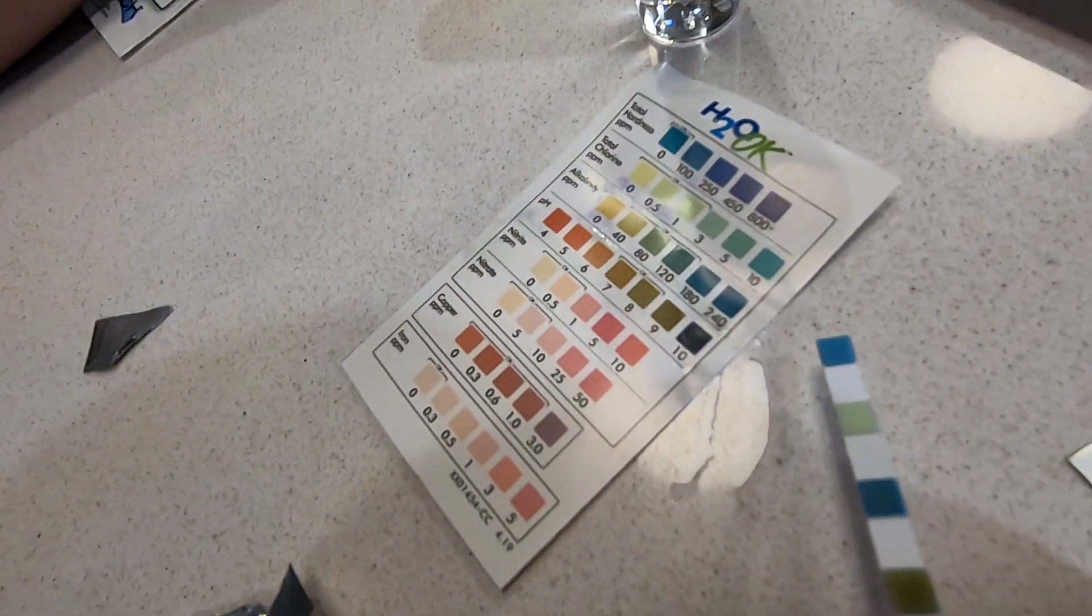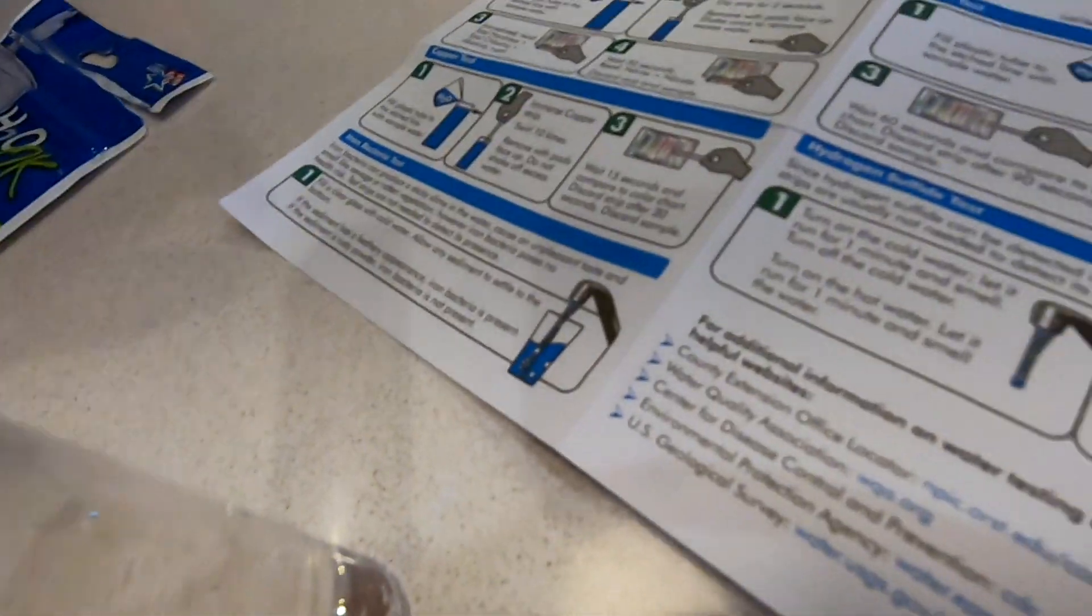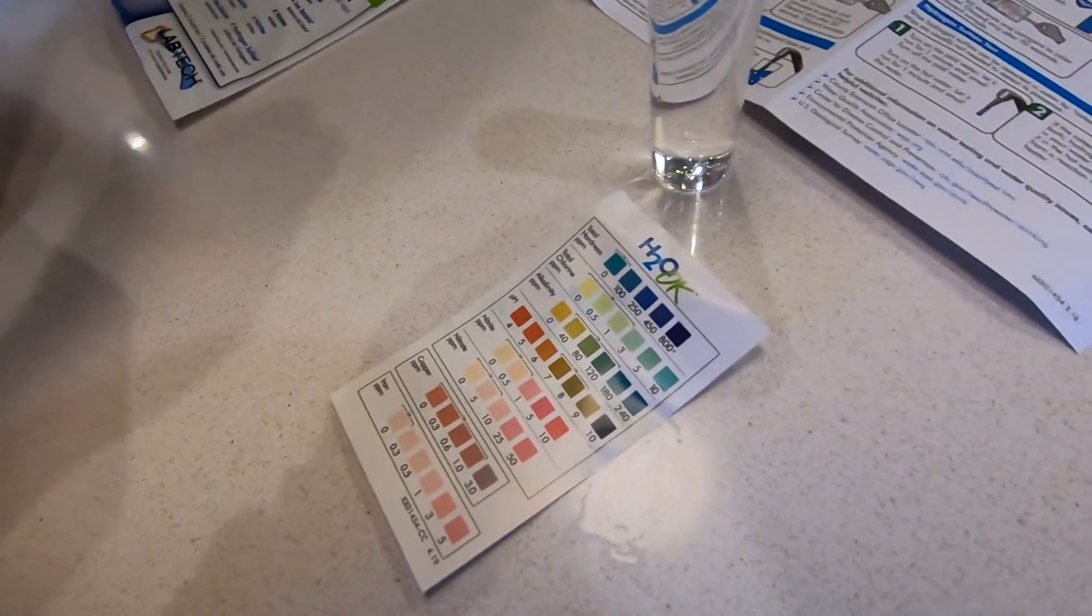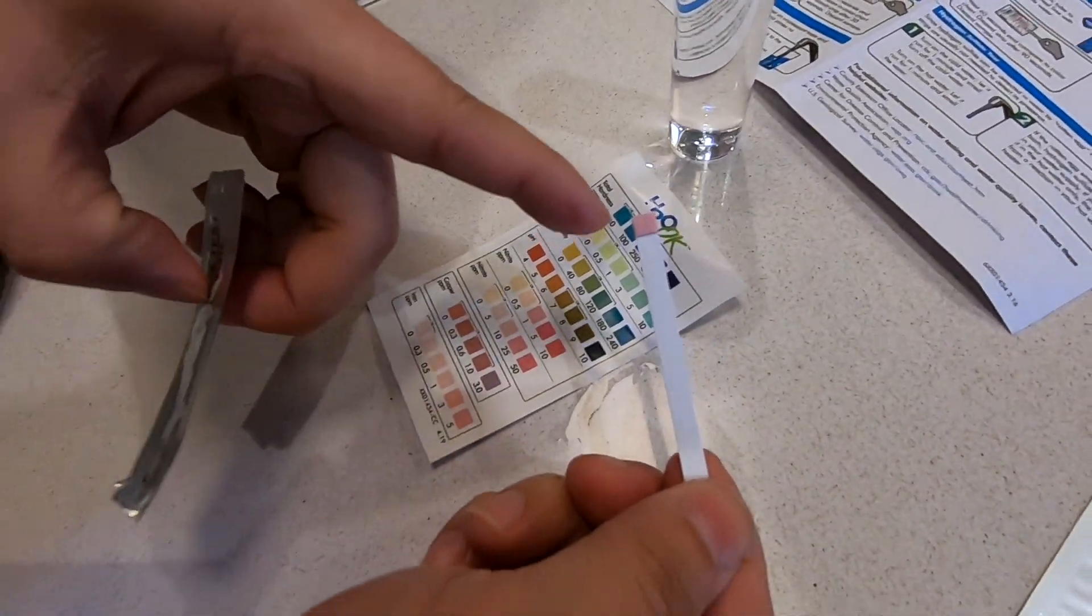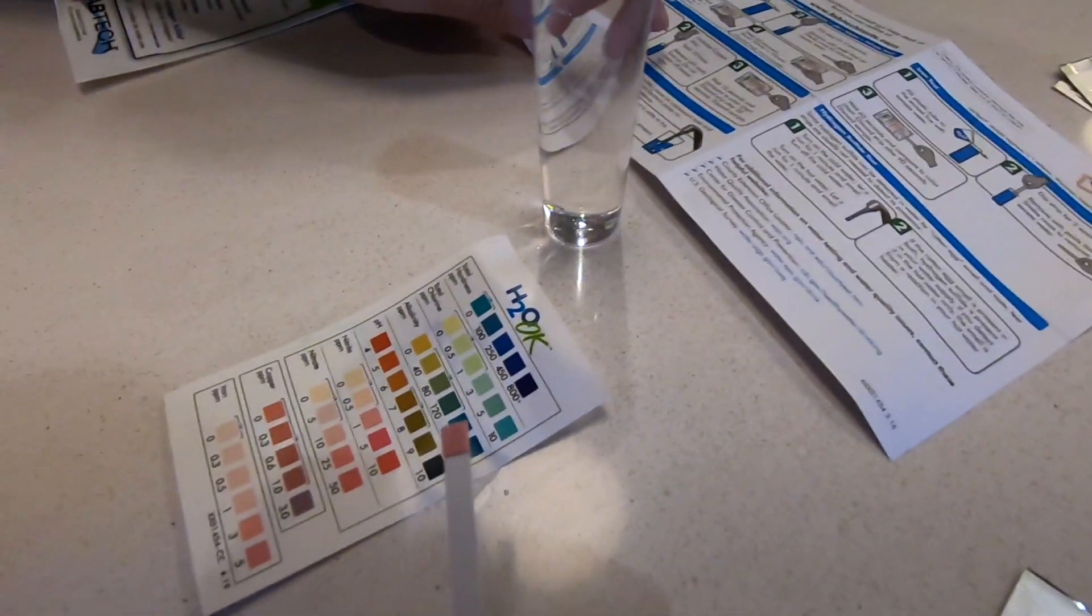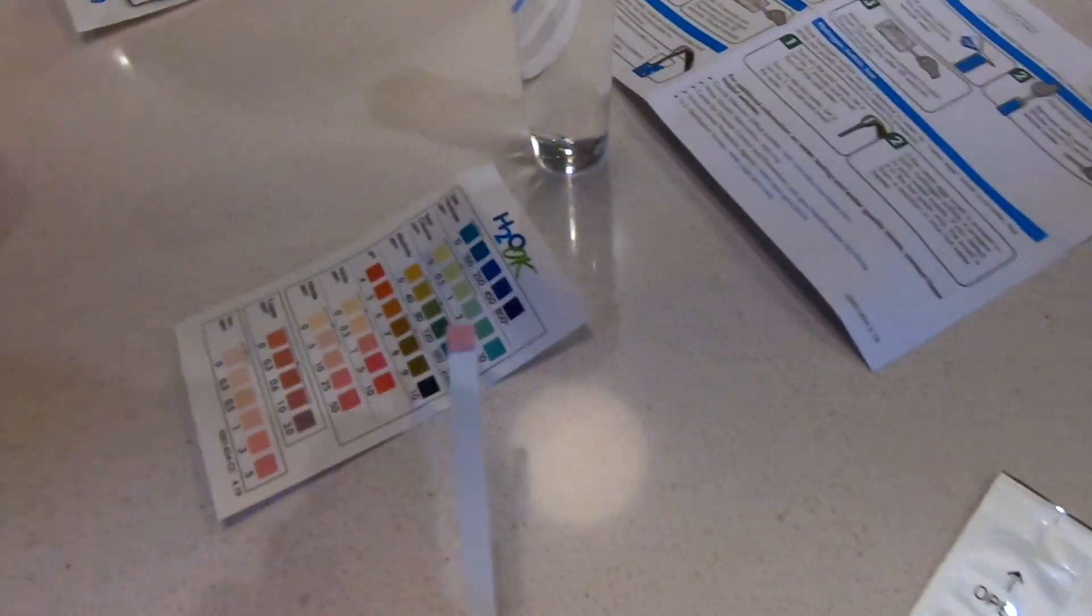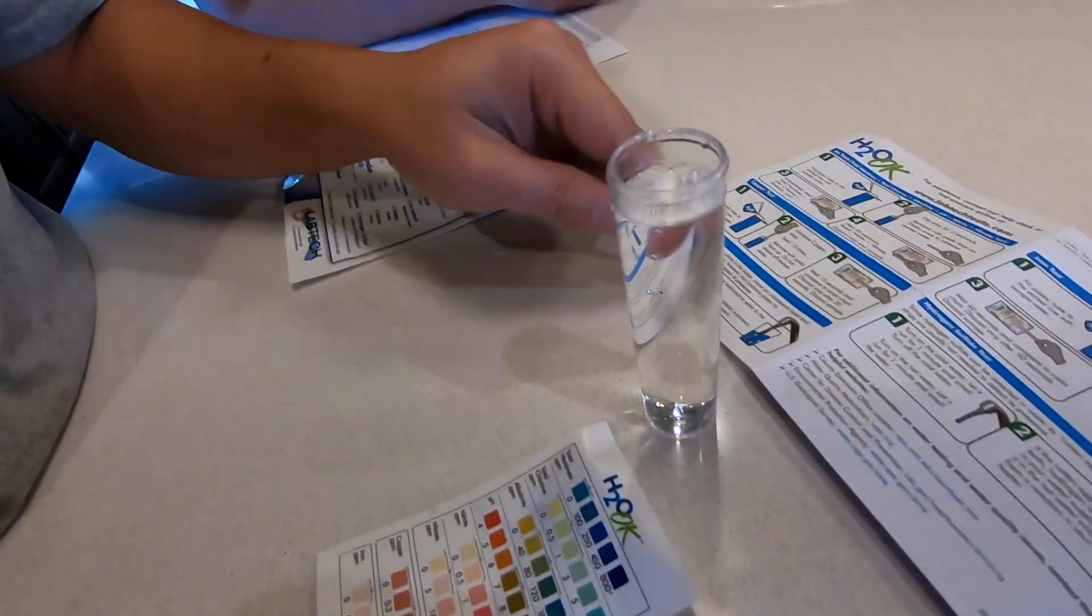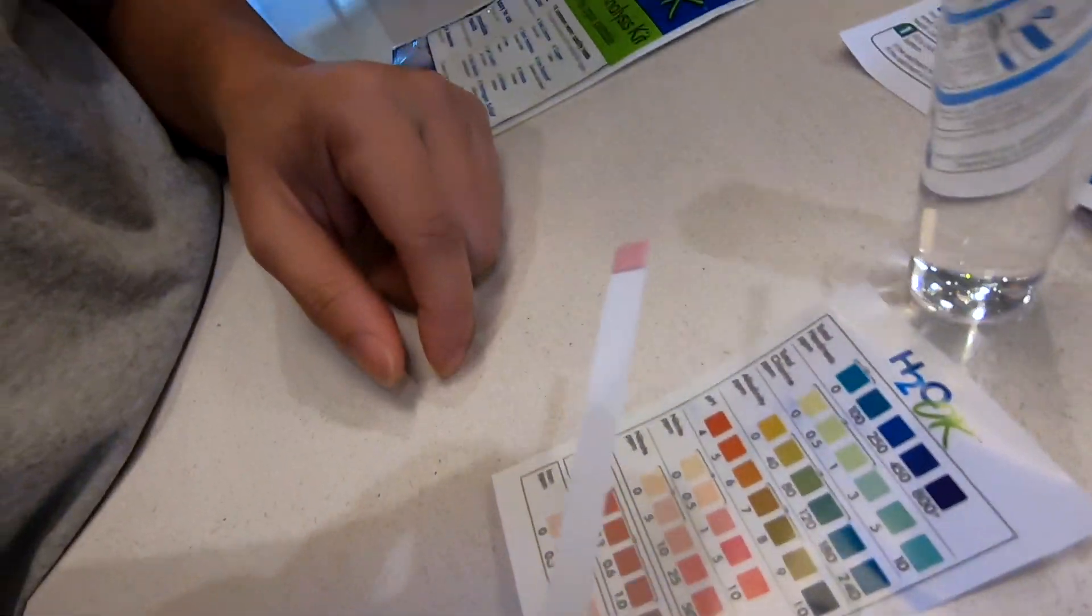Let's do the copper test next. In the copper test there's only one testing pad. The instruction says put it in the water, swirl 10 times, remove the pad facing up, do not shake it, and wait 15 seconds to compare the color to this color chart here.